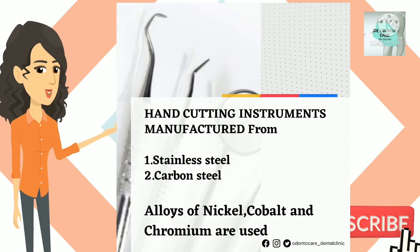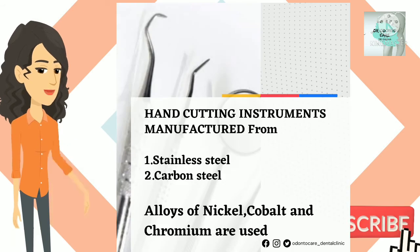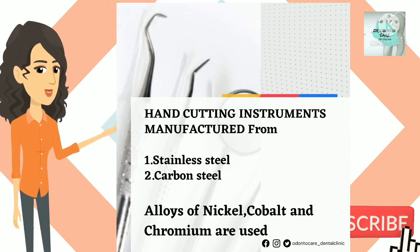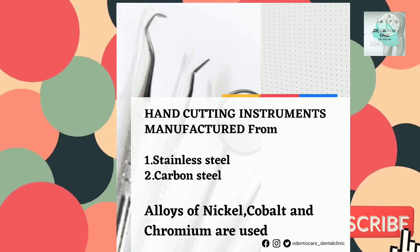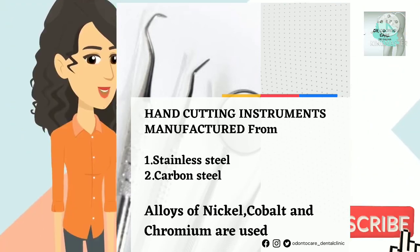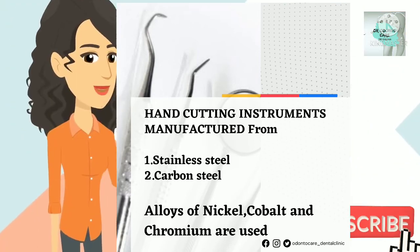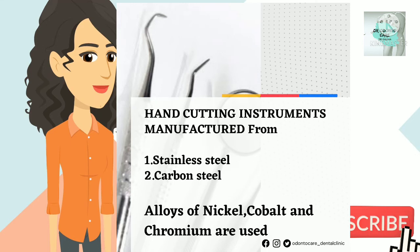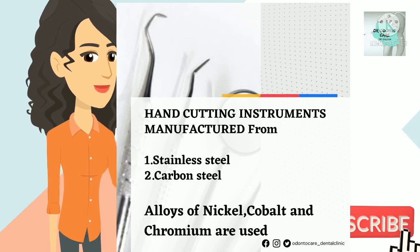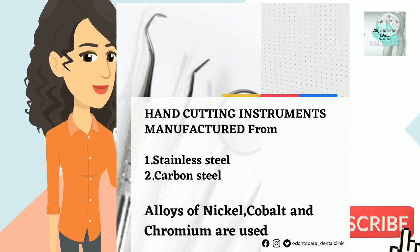Hand-cutting instruments are manufactured from two main materials: stainless steel and carbon steel. Some instruments are made with carbide inserts to provide a more durable cutting edge. Alloys of nickel, cobalt, or chromium are also used in the manufacture of hand instruments.